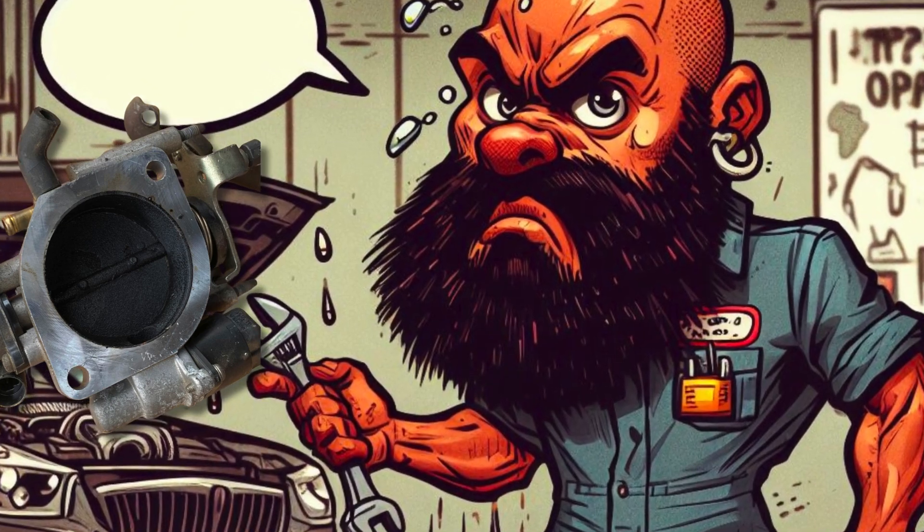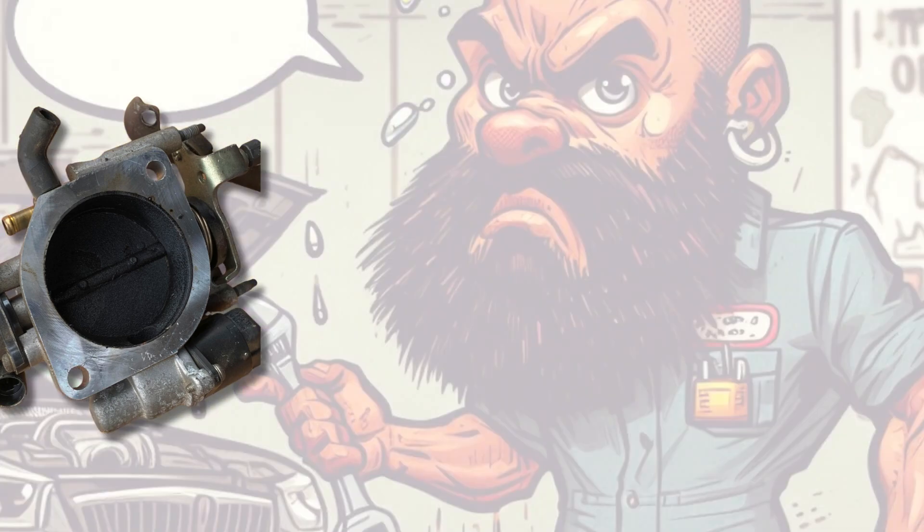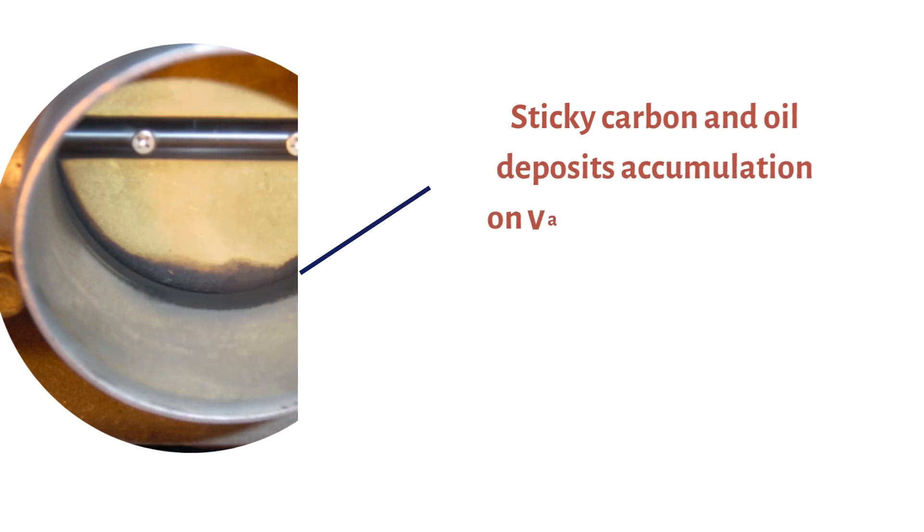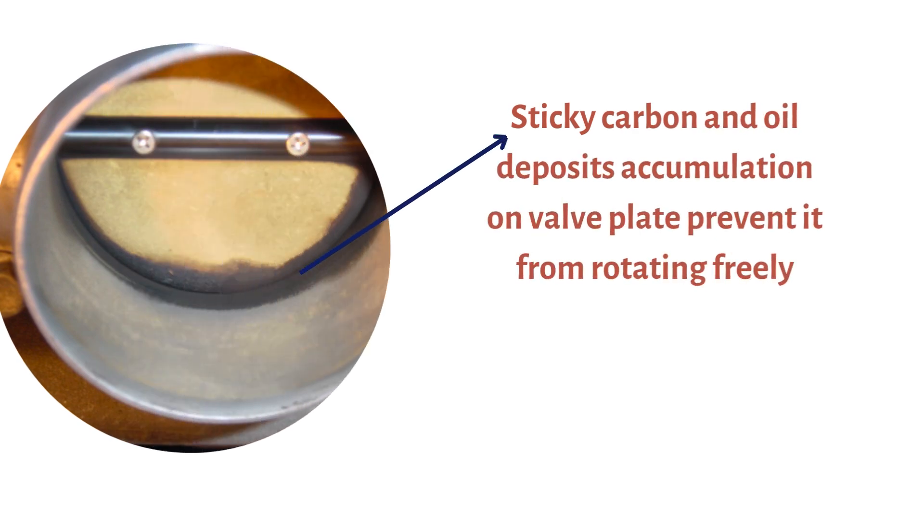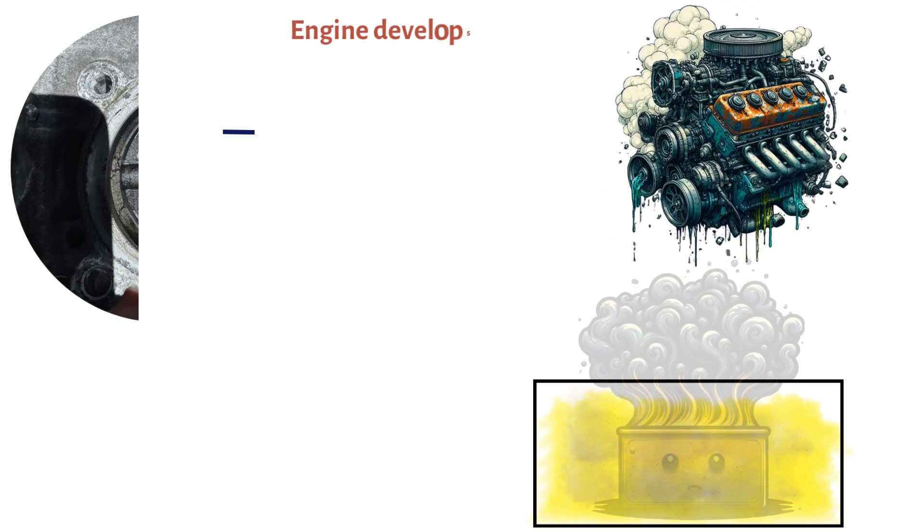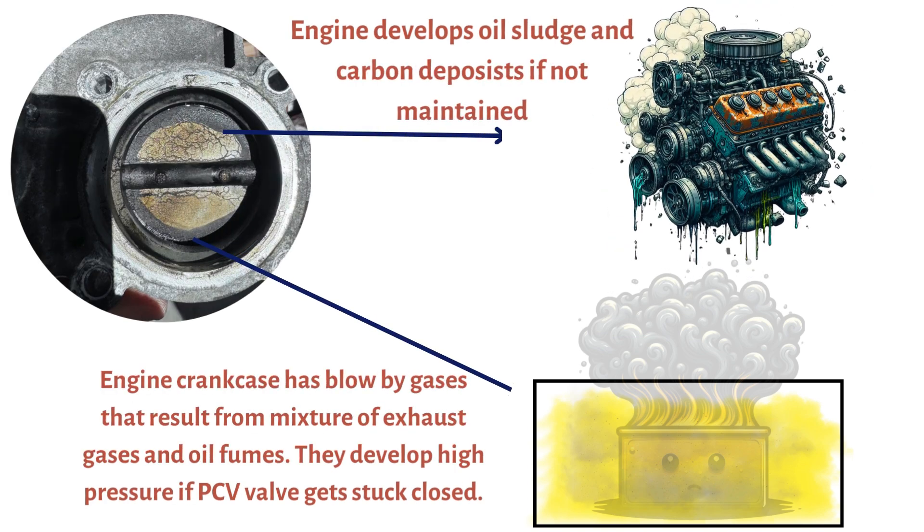Now, you might be thinking how do throttle bodies fail? Weld-dot carbon deposits and gunk accumulation can prevent the throttle valve from moving freely. Carbon buildup occurs from blow-by-gases and a lack of routine engine maintenance.